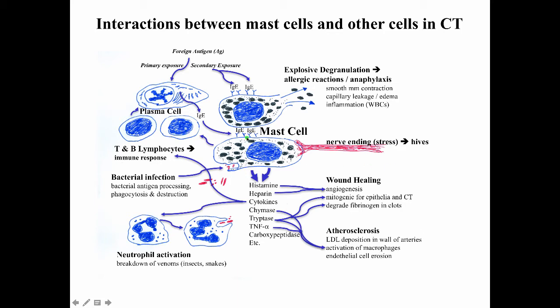Mast cell granules can stimulate lymphocytes to enhance immune responses and may be involved in wound healing. For example, histamine and heparin might stimulate angiogenesis. Substances like chymase and tryptase might be involved in processes like atherosclerosis. In wound healing, these substances might induce angiogenesis, be mitogenic for epithelial and connective tissue cells, and perhaps be involved in degradation of clots. With respect to atherosclerosis, substances released from mast cell granules might stimulate LDL deposition, especially in artery walls.